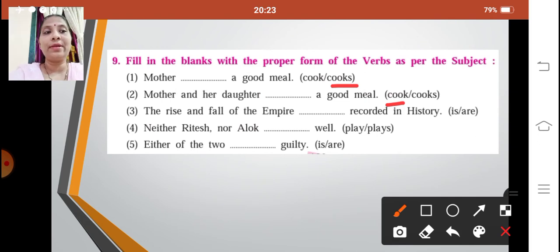The rise and fall of the empire dash recorded in history. So the rise and fall of the empire is recorded in history. Neither Ritesh nor Alok dash well. So neither Ritesh nor Alok play well. Either of the two is guilty. Either of the two is guilty, that is our answer.